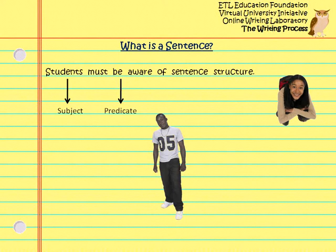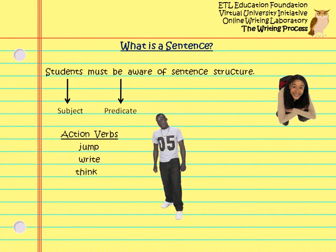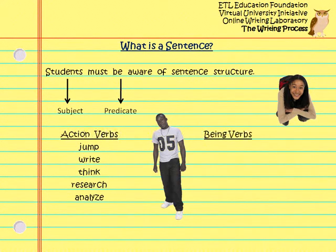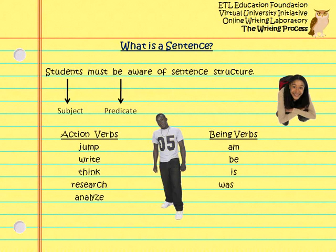Remember, there are two types of verbs. Action verbs, such as jump, write, think, research, and analyze. And being verbs, such as am, be, is, was, and seem.